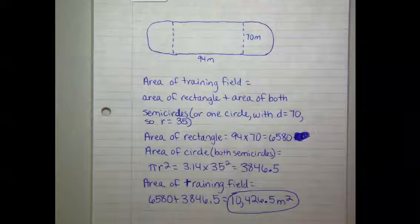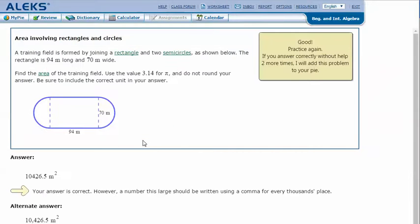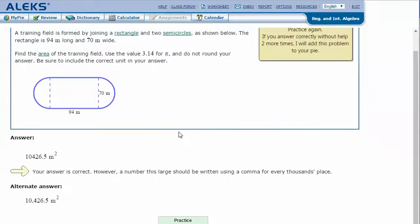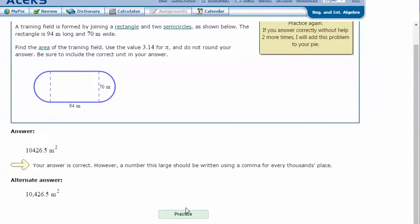In my ALEKS screen, I type in the answer that I got in my notes: 10,426.5 meters squared. Click Next, and it says I got the correct answer. Thanks for watching!